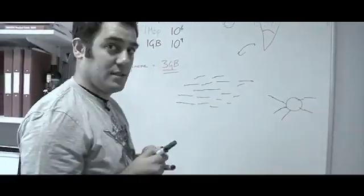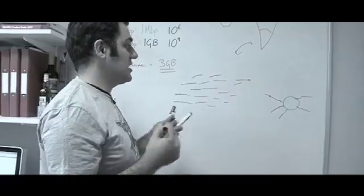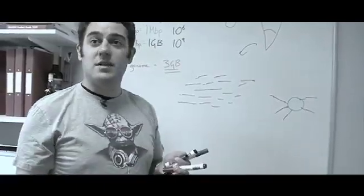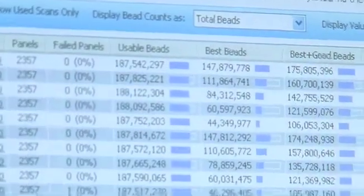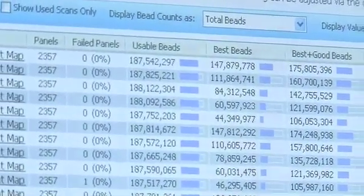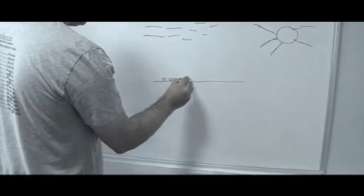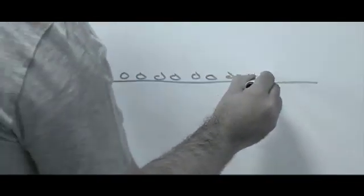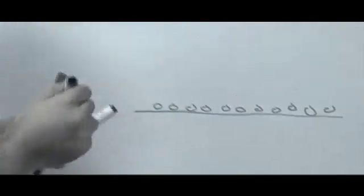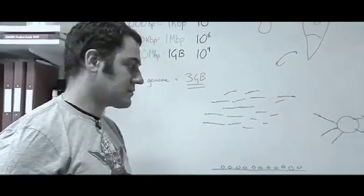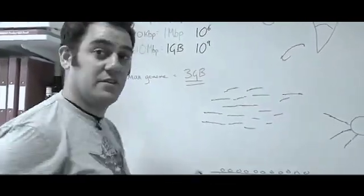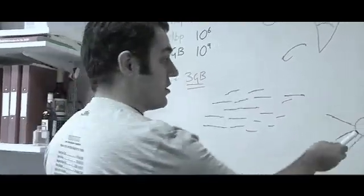You then take these beads. So on the machine that we use, we use 400 million of these beads on one run. And essentially you get a slide and you just put the beads on the slide like this. And these beads all have one piece of DNA which has been clonally amplified. Unfortunately you do get some beads that have no DNA and some beads that originally got more than one piece of DNA, so those won't work.